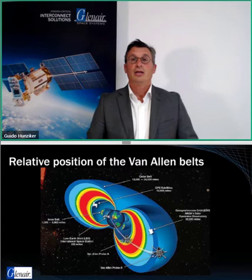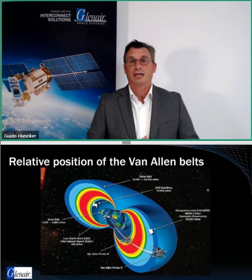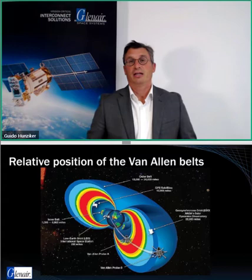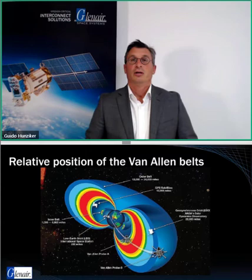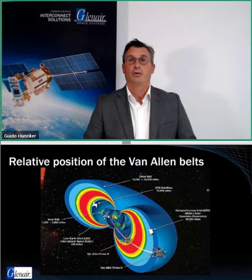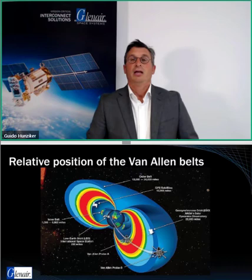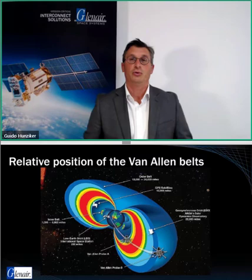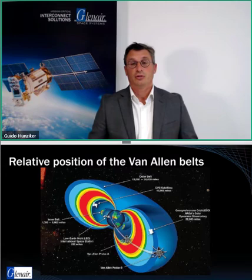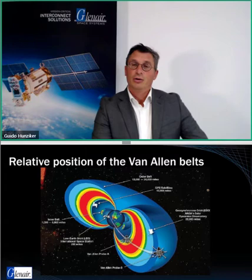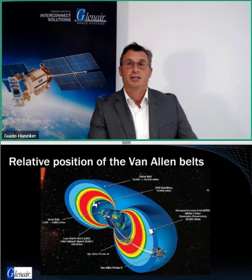The Van Allen belts follow the magnetic field surrounding the Earth. There's an inner Van Allen belt, which is really important for low Earth orbit, and an outer belt which is important for geostationary orbit. Unfortunately, the two most interesting orbits we use around the Earth are very close to the Van Allen belts. We must consider what happens there in order to design the right materials and grounding structures into our spacecraft.